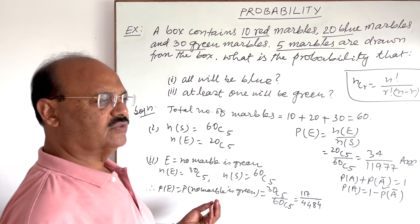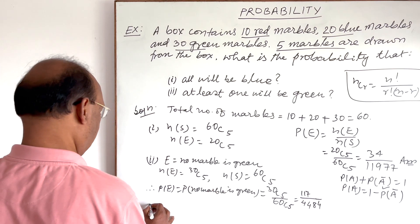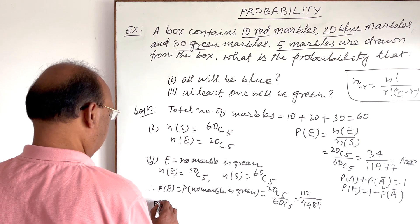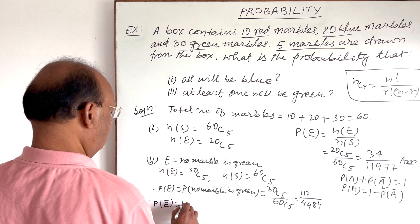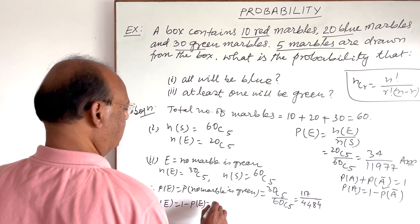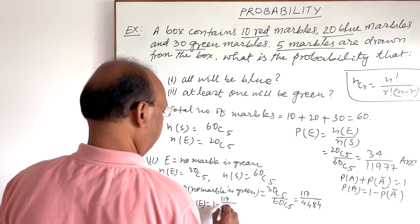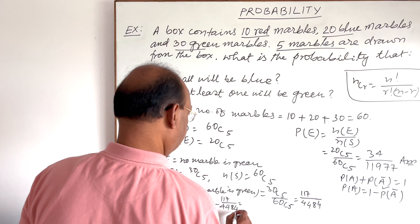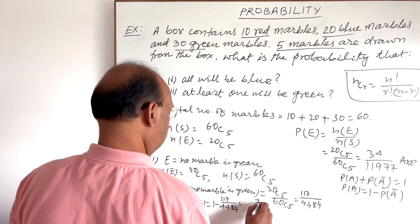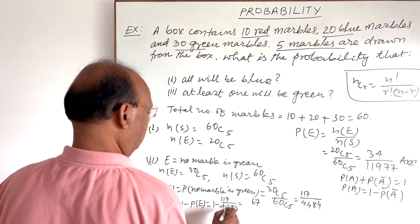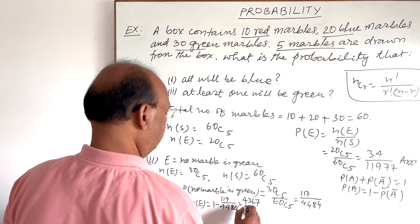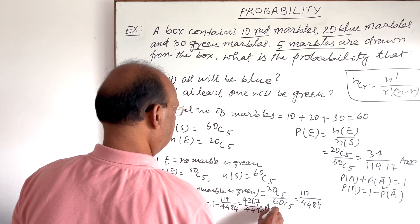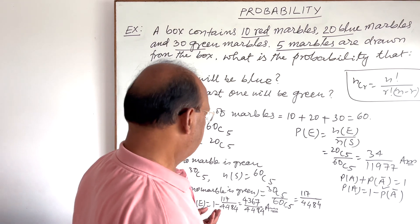Since at least one marble being green is the complement of no marble being green, we use: P(A) = 1 − P(not A). Therefore, P(at least one green) = 1 − (170/4484). Simplifying: (4484 − 170) / 4484 = 4314 / 4484. Wait — computing carefully: 4484 − 170 = 4314... the transcript gives 4367 divided by 4484 as the final answer.